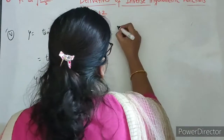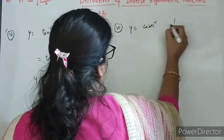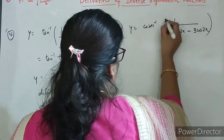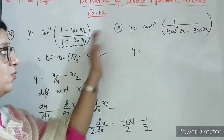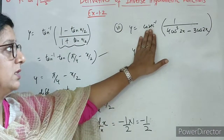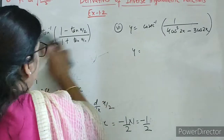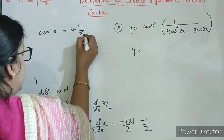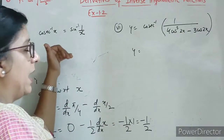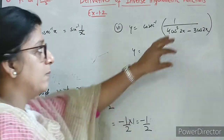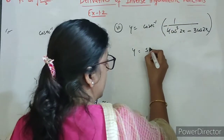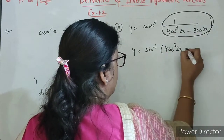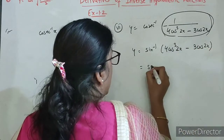Now come to sixth one, and the sixth part is cosec inverse of 1 upon 4 cos cube 2x minus 3 cos 2x. Now you can see here that y is given as cosec inverse. Aur humi kis me change karna hai — sine mein. So property: cosec inverse x ko we can write sine inverse 1 by x. Matlab joh bhi yahaan likha hai, is ka reciprocal — toh jab mein cosec ke place par sine inverse likhungi, toh iska reciprocal kya ho jayega? 4 cos cube 2x minus 3 cos 2x.